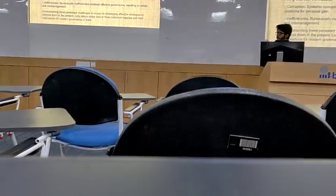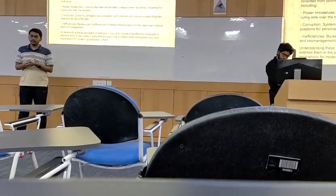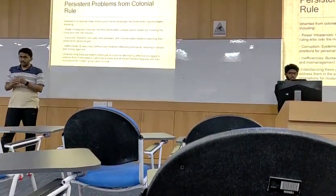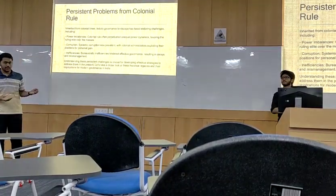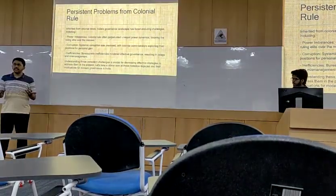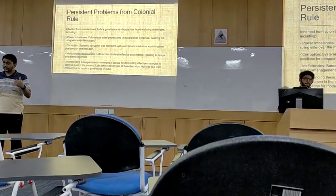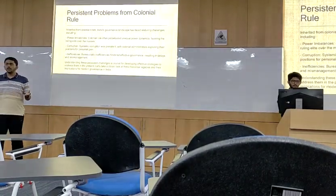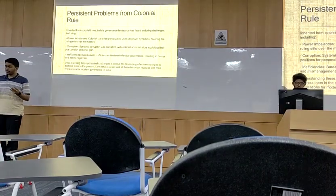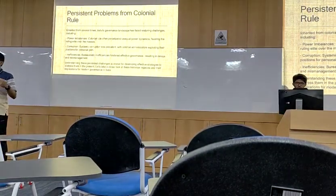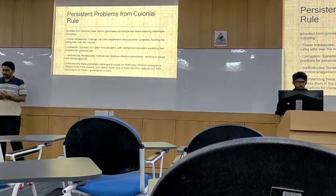Persistent problems from colonial rule: since colonial times, India's governance has mainly experienced three problems. The first is power imbalance, where the ruling elites are favored more than the masses. The second is systemic corruption, where colonial administrators exploited their position for personal gain. The third is bureaucratic inefficiencies, which caused delays and misinterpretations in government functioning.